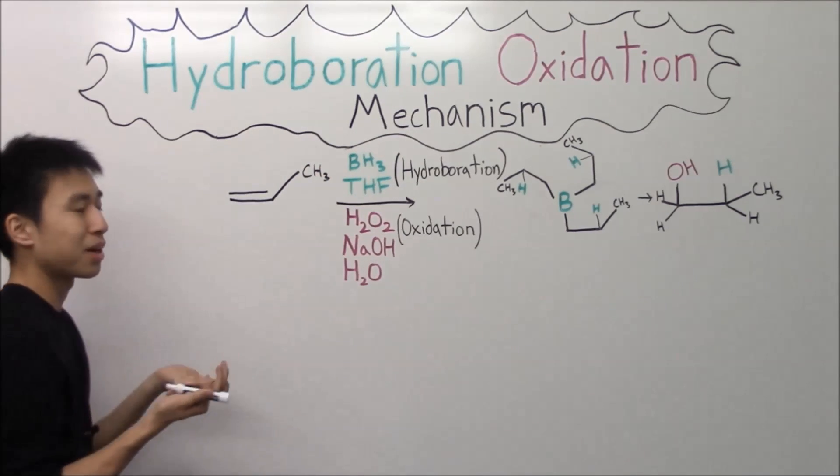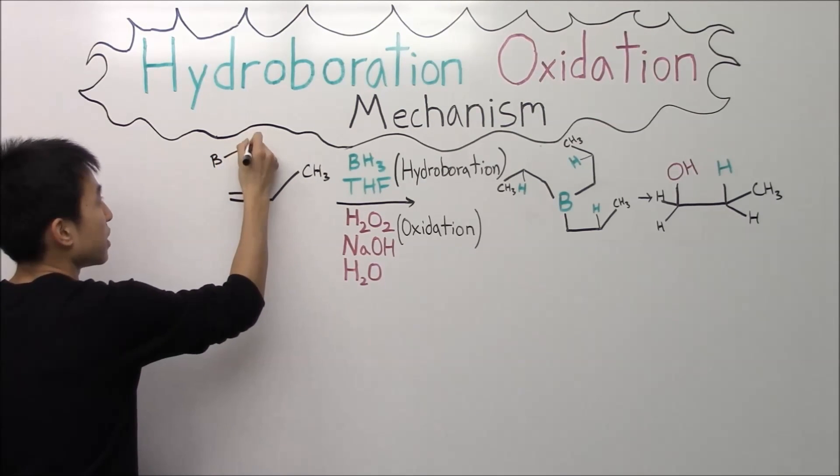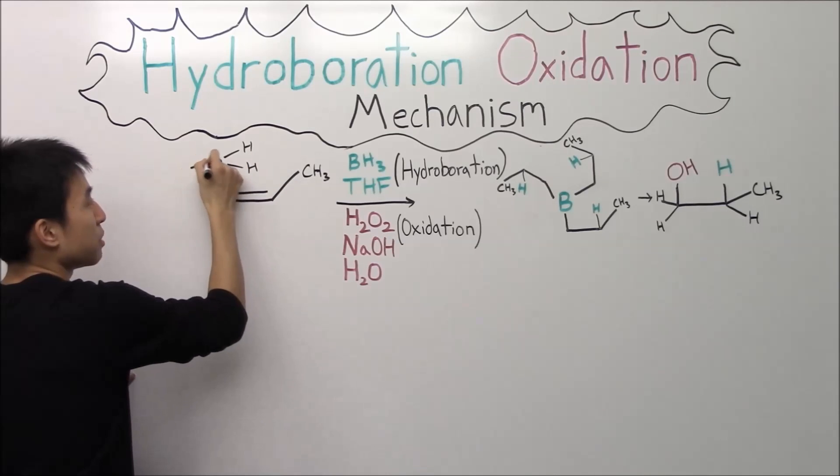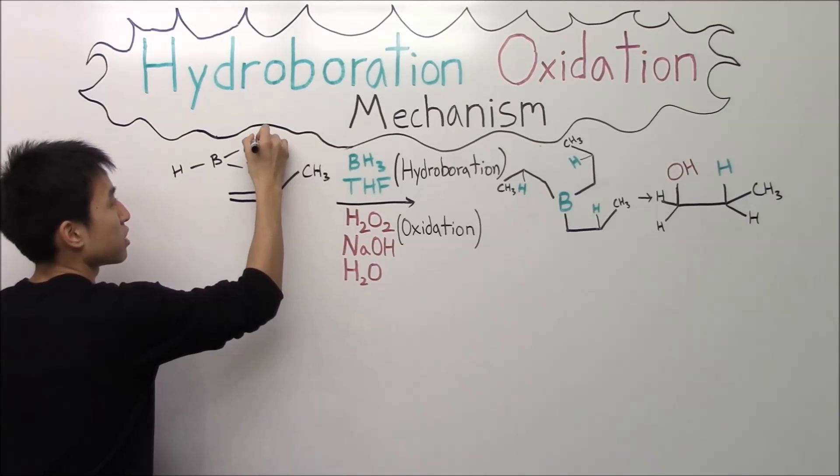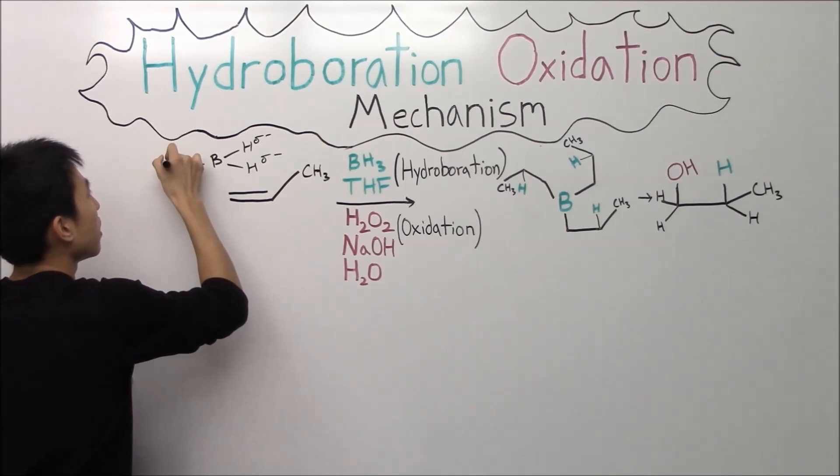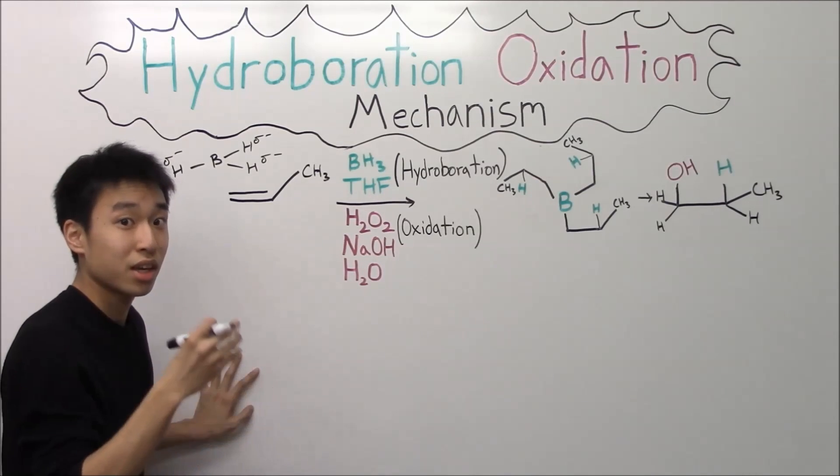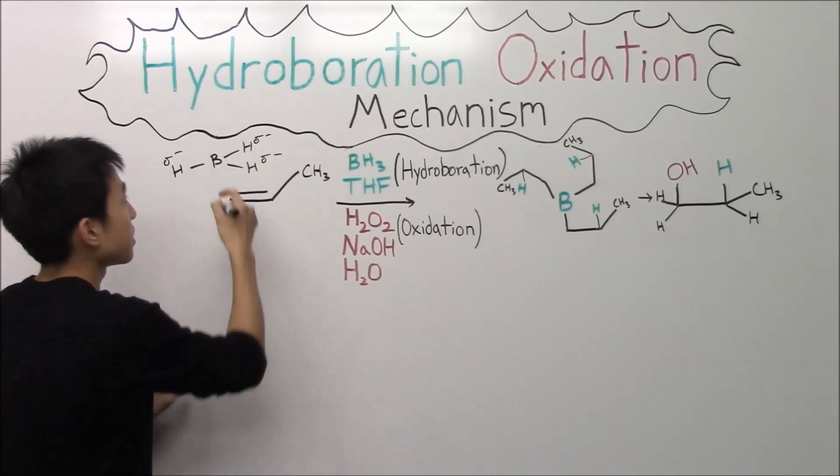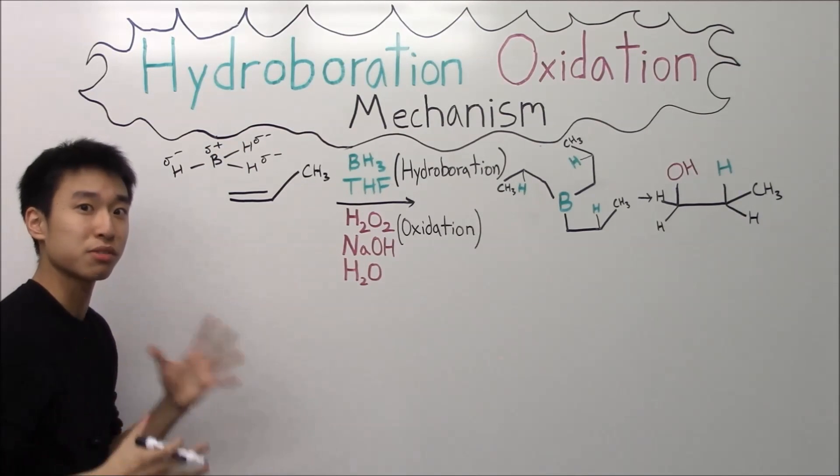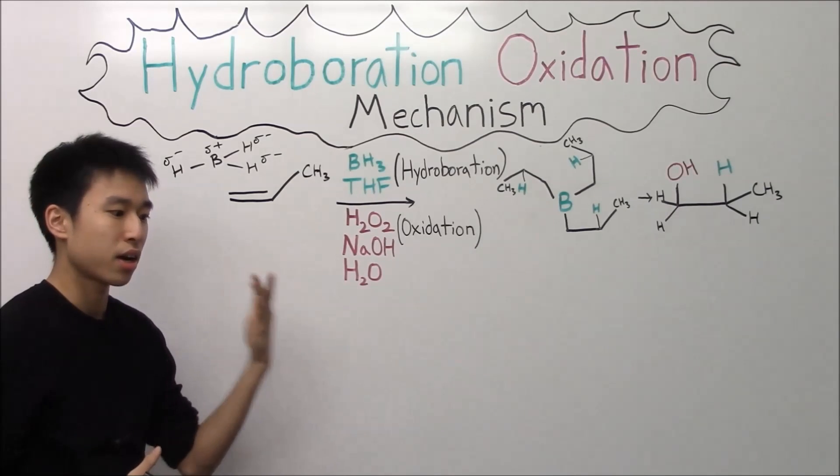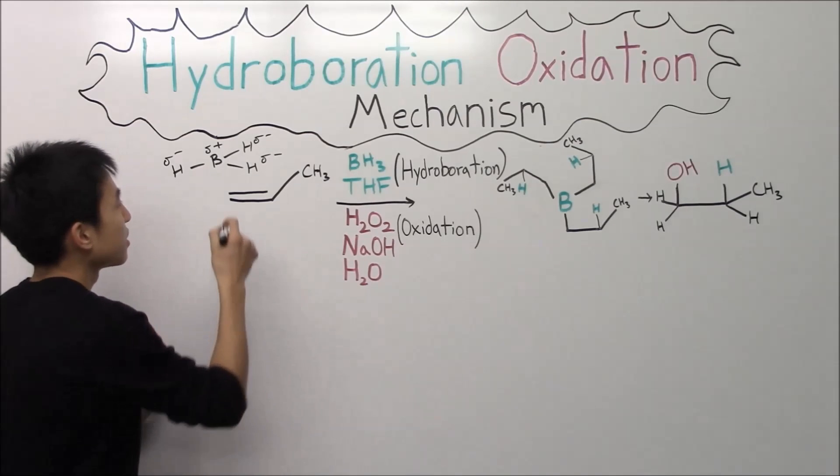So let's do the mechanism out. You have your BH3. Hopefully you remember from my last video that boron's kind of a wimp, right? So because boron's kind of a wimp, you have partial negative charges on hydrogen. And what I meant by boron's a wimp is that he can't hold onto his electrons, he's not very electronegative, so he's actually partially positive. And that's why this reaction is so different from the other ones you've done, like hydrohalogenation, acid-catalyzed hydration, et cetera.